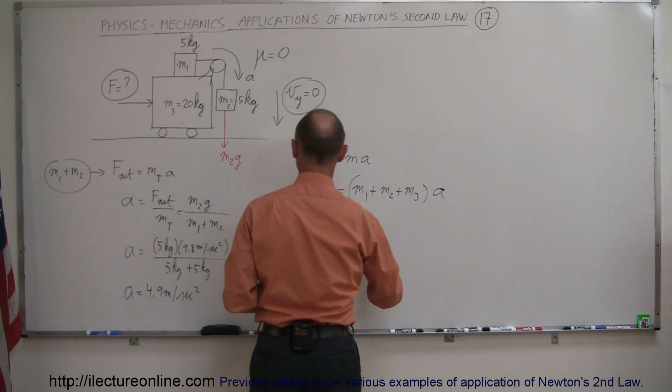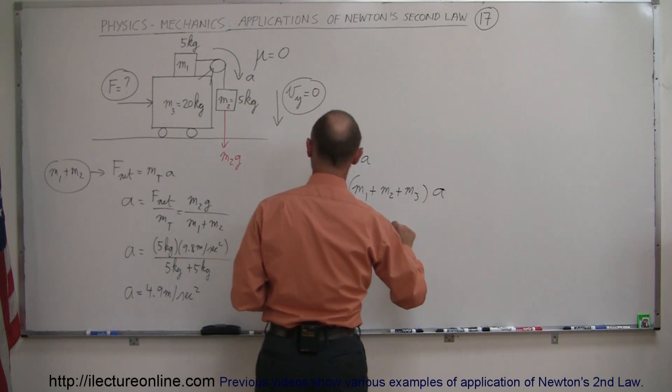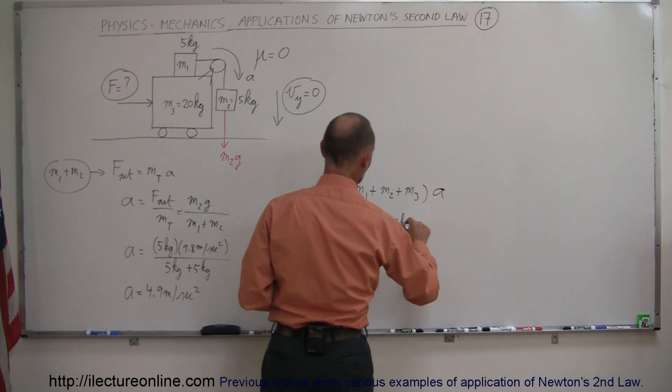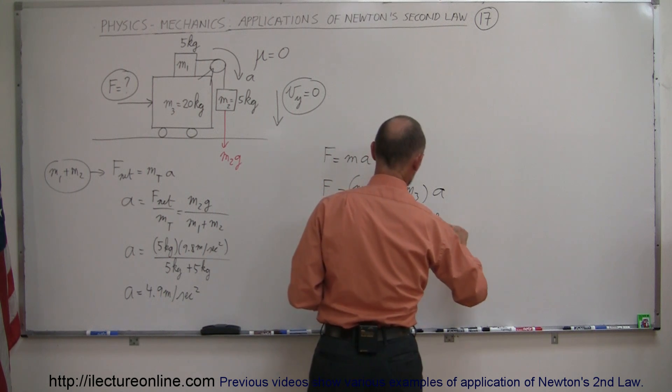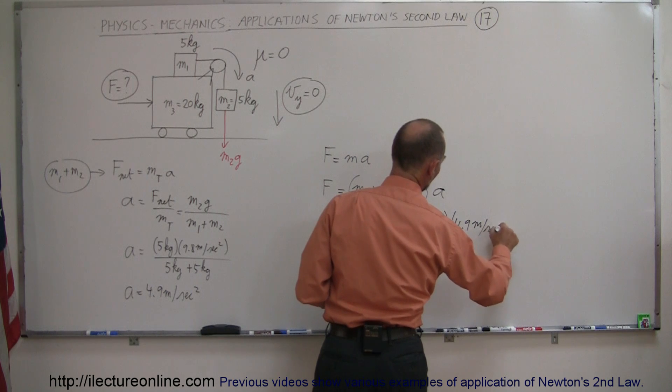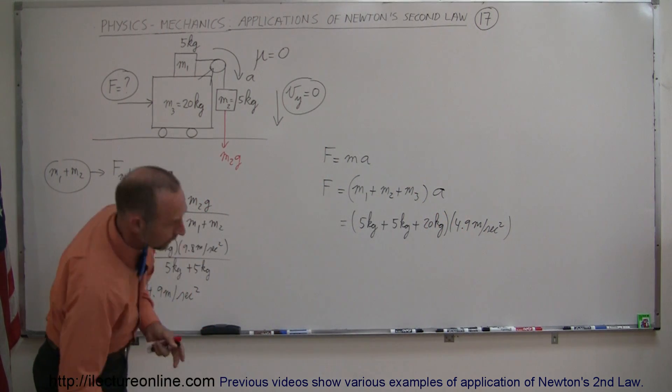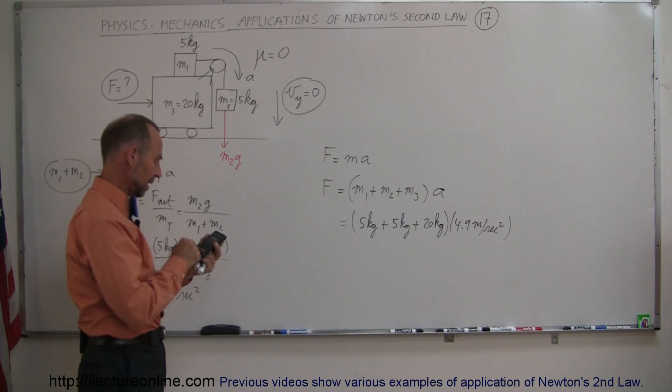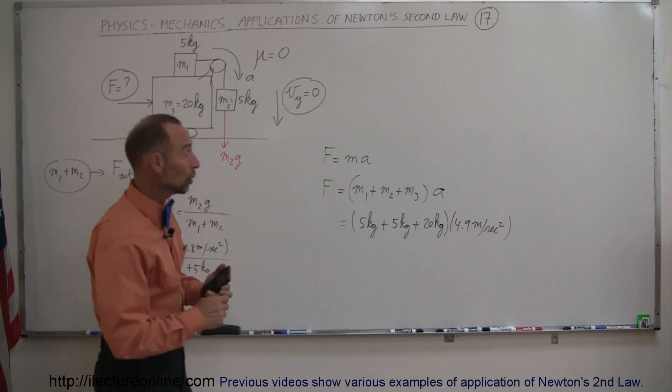So in this case this is equal to M1 which is 5 kilograms, M2 which is also 5 kilograms, and M3 which is 20 kilograms, and they should then have an acceleration of 4.9 meters per second squared. All right that's 30 times 4.9. So 4.9 times 30 and we get 147 newtons.